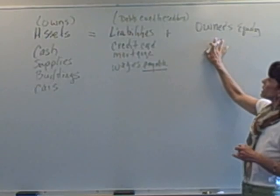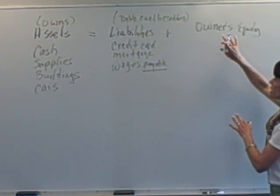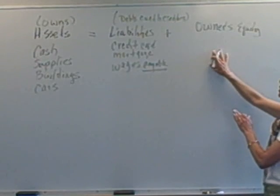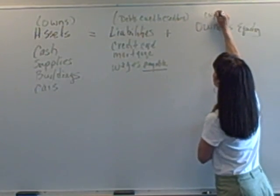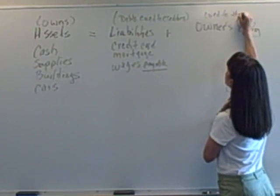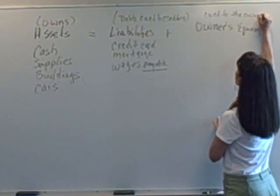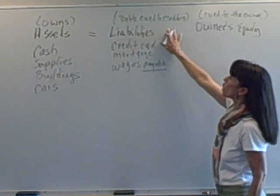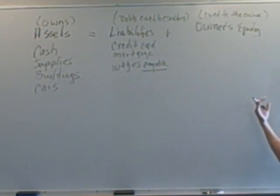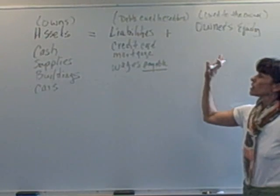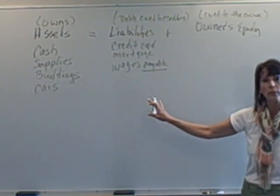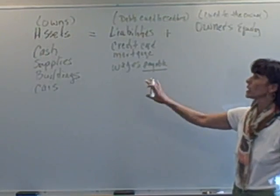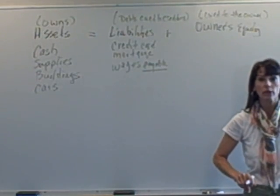Let's go to owner's equity. Now owner's equity is the portion of the assets that are owed by the owner. So this is what is owed to the owner. So debts or liabilities are owed to creditors. Owner's equity, this is what is owed to the owner. Now we can record any transaction that happens with the business using this accounting equation. Assets equal liabilities plus owner's equity.